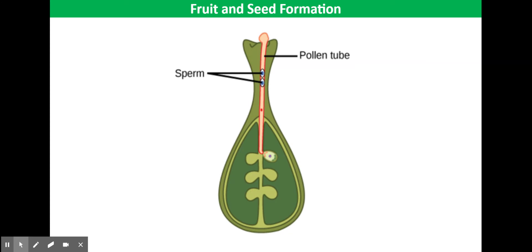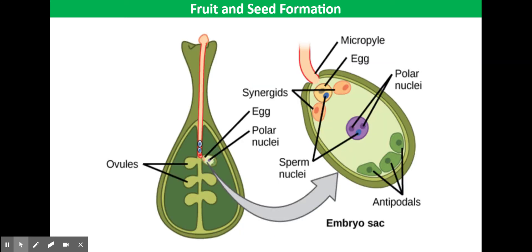The pollen tube grows through the style until it reaches an ovule inside the ovary. The nucleus of the pollen then passes along the pollen tube and fuses with the nucleus of the ovule. This process is called fertilisation.